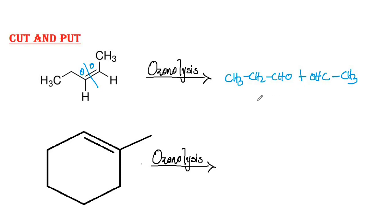For the second one, the same way, cut the double bond, put oxygens across it. So the formed product will be looking like a CHO here and a C double bond O here.